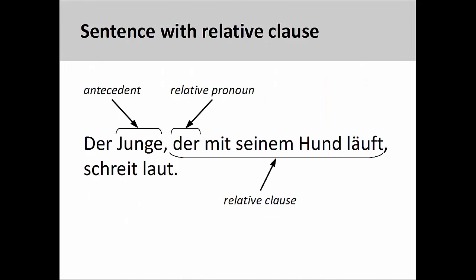You will recall that a relative clause is a type of subordinate clause that provides more information about the antecedent it modifies. In the sentence you see on the screen — 'der Junge, der mit seinem Hund läuft, schreit laut' — the boy who runs with his dog yells loudly. The antecedent 'Junge,' boy, is further modified by the relative clause 'der mit seinem Hund läuft,' who runs with his dog.